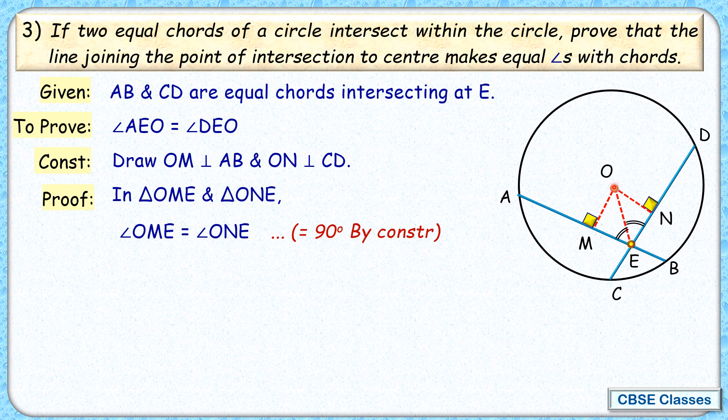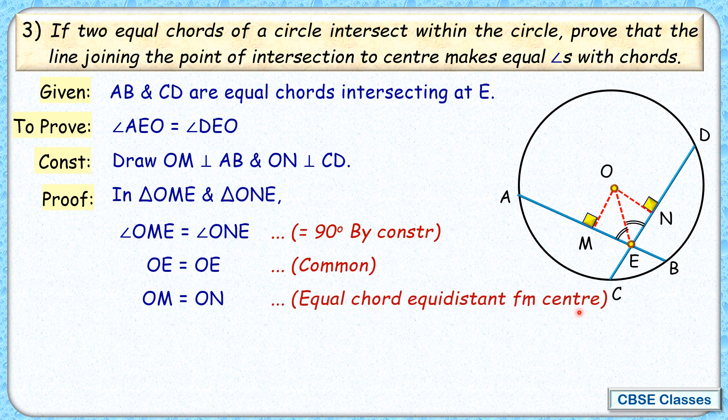And then next is if we will check this OE, OE is common in both. And the last is your equal chords. We know AB and CD they are equal chords. Equal chords are equidistant from the center. So we can say here that OM and ON they are equal. Why they are equal? Because equal chords are equidistant from the center.